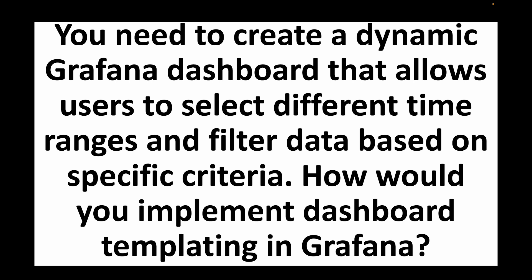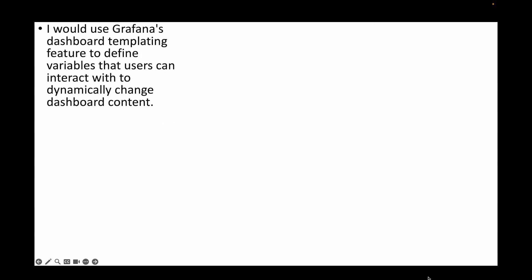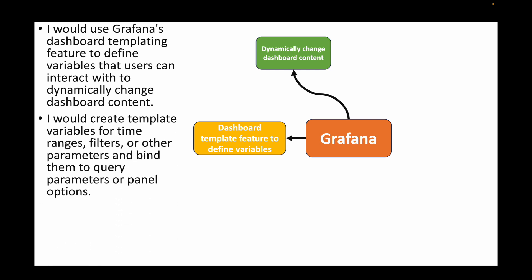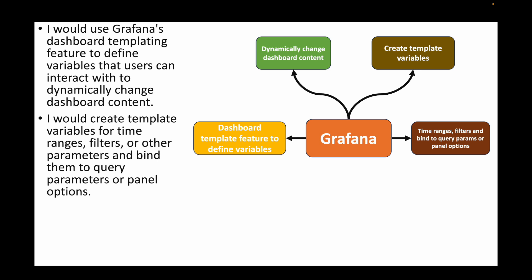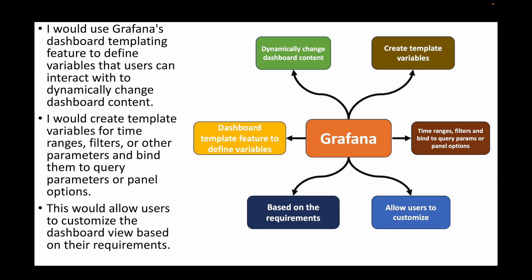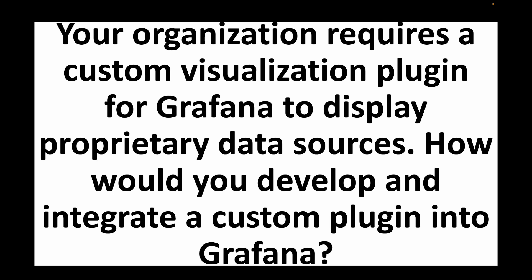The next question: you need to create a dynamic Grafana dashboard that allows users to select different time ranges and filter data based on specific criteria — how would you implement dashboard templating? We can make use of Grafana's dashboard templating feature by defining variables. We can create template variables for time ranges, filters, or other required parameters and bind them to query parameters or panel options. This allows users to customize the dashboard view dynamically based on their requirements.